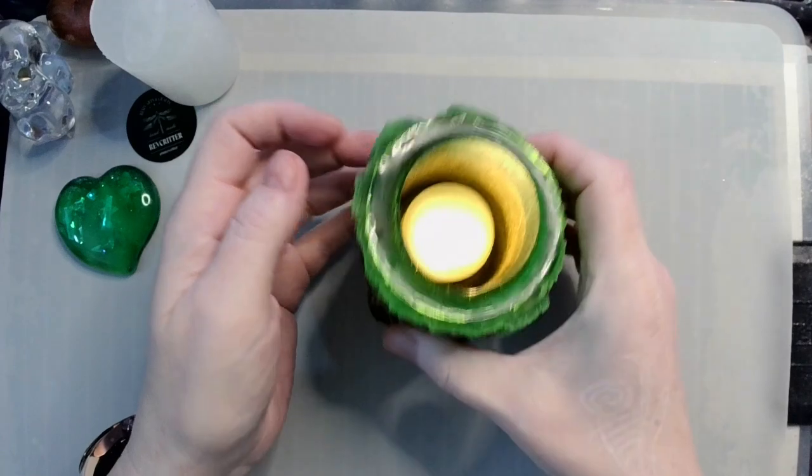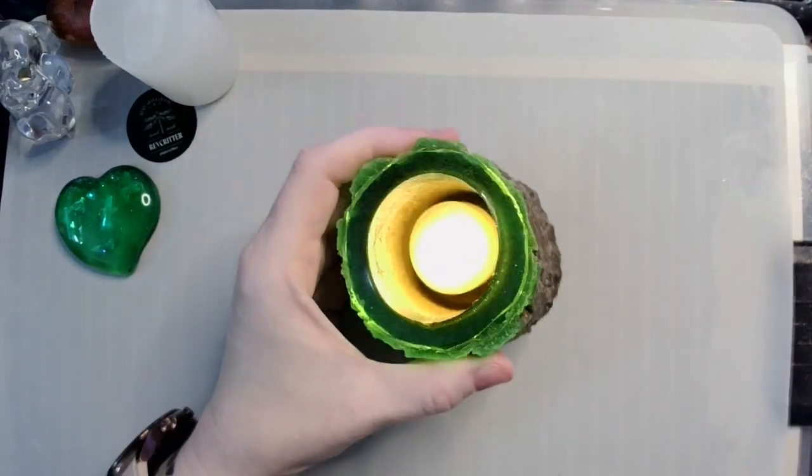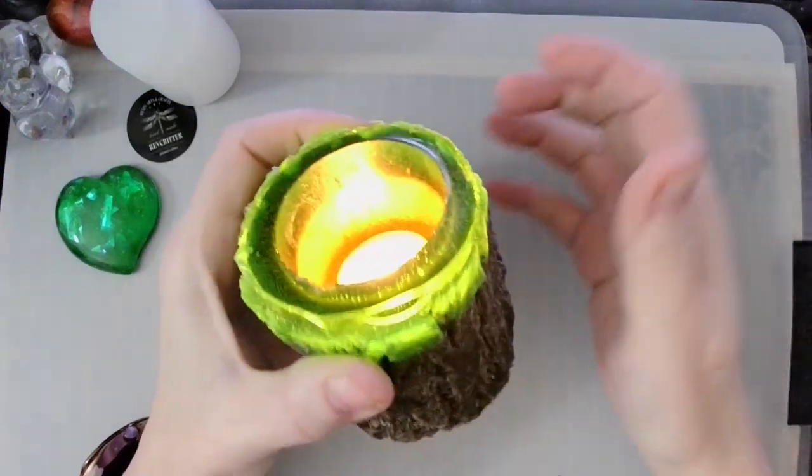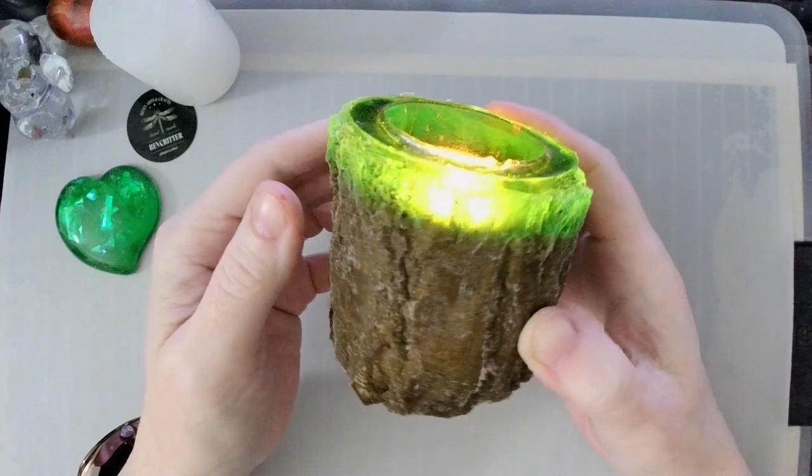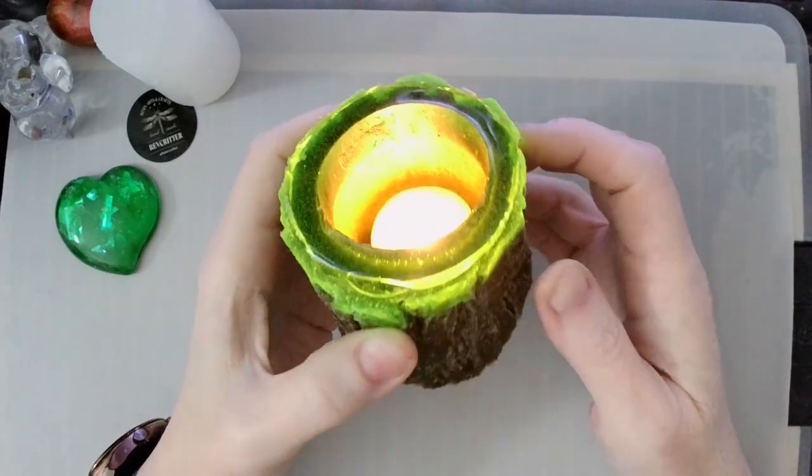So here we have our little tea light. Put that in there and we have a lovely green glow. Turn off my big overhead light here. Look at that. Isn't that neat? I really like the way that turned out.